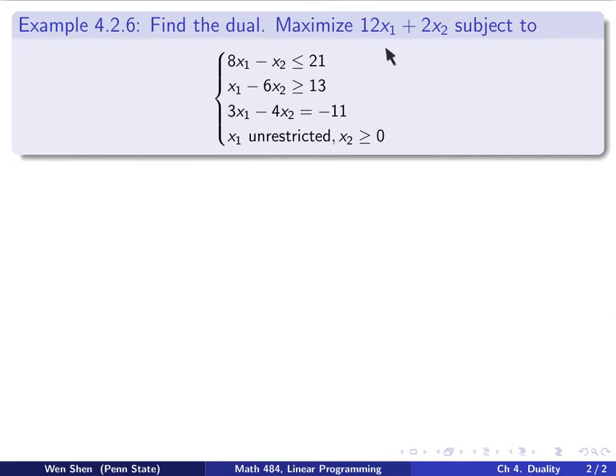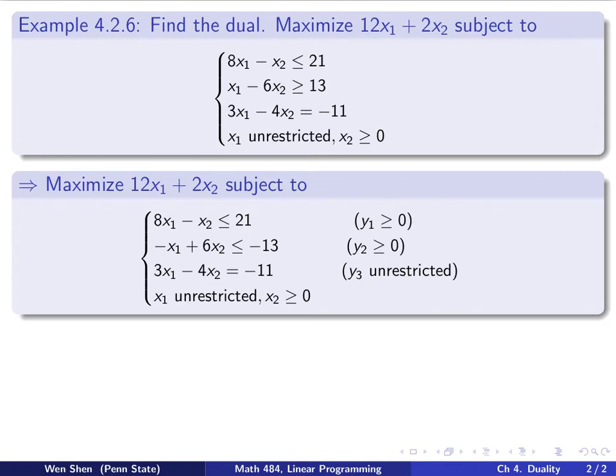Here is a maximization problem. I have two variables, x1 and x2, and I have three constraints. x1 is unrestricted, x2 is restricted. This is a maximization problem, and that means I need to have less than equal sign. So I spot that the second one here has the wrong inequality, and I need to change that first.